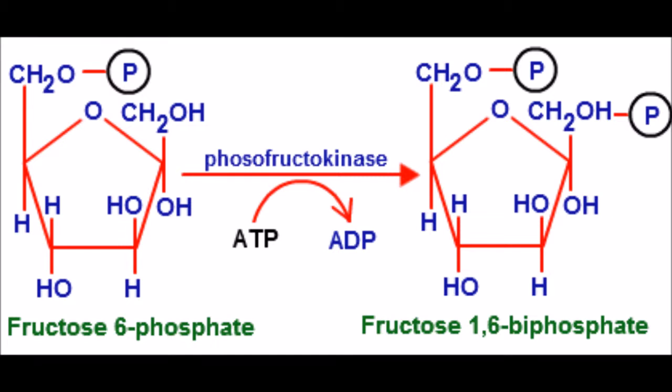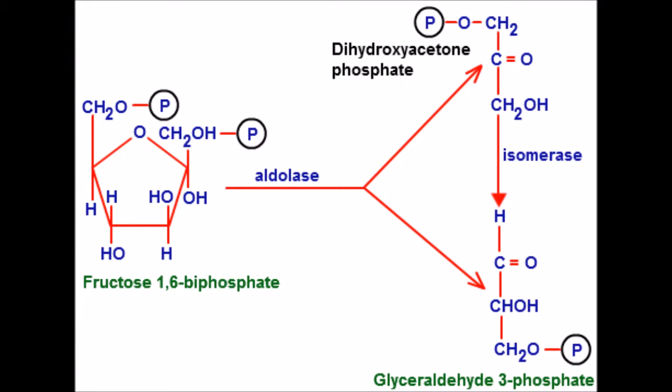As we reach reaction 4, we enter phase 2, the cleavage phase. In this phase, the 6-carbon molecule fructose 1,6-bisphosphate is cleaved or split into two 3-carbon molecules, glyceraldehyde 3-phosphate and its isomer, dihydroxyacetone phosphate.